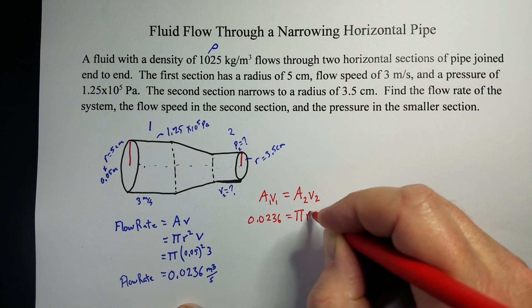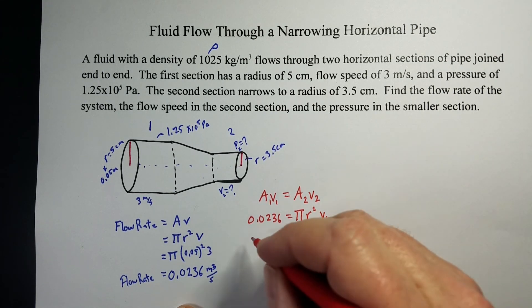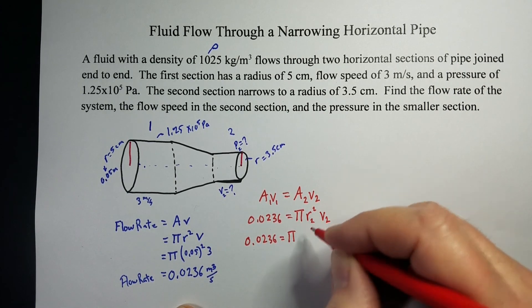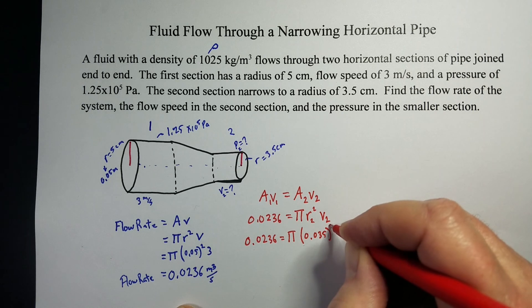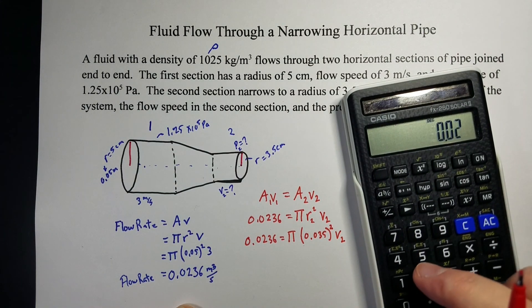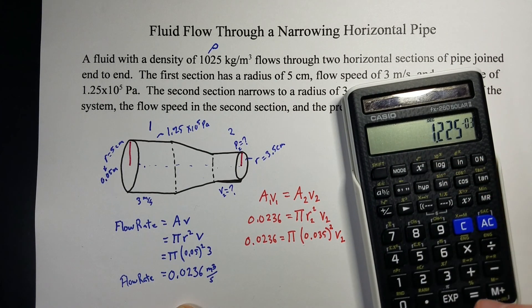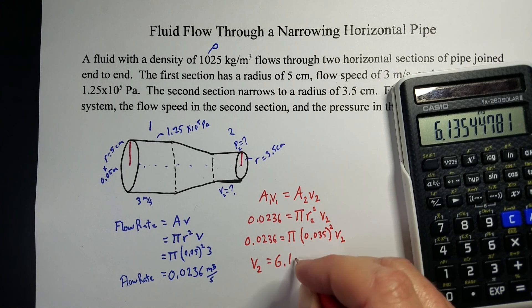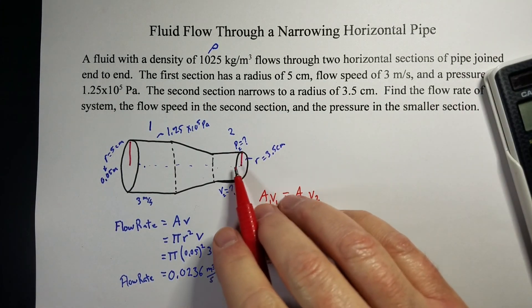So, it's still area, so it's still pi r squared, but now it's for the second section. And we've got to figure out the velocity in the second section as well. And so, 0.0236 equals pi, I'm still going to use 3.14. But now the radius has shrunk down to 0.035 meters, and that's got to be squared. And then we're going to find the velocity. So, 0.0236 divided by 3.14 divided by 0.035 squared equals a velocity of 6.14 meters per second. So, that's the velocity of the water coming out the smaller end of the pipe.